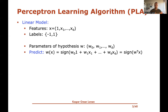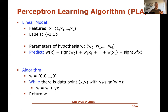We also saw an algorithm for choosing such parameters w: the perceptron learning algorithm. It initializes the weight vector as all zeros, and while there is still a misclassified data point — a point x, y where the sign of the inner product of w and x differs from the actual label y — we update the hypothesis by adding y times x to w.